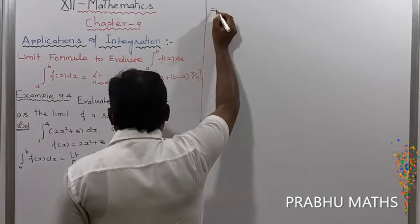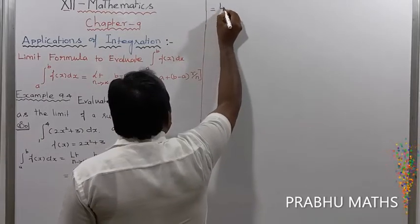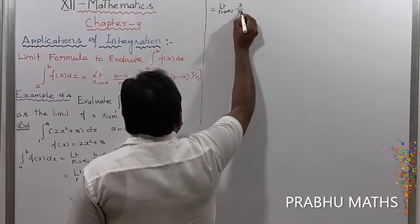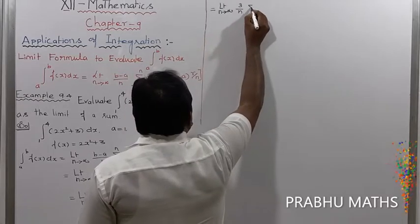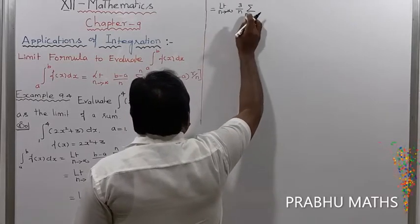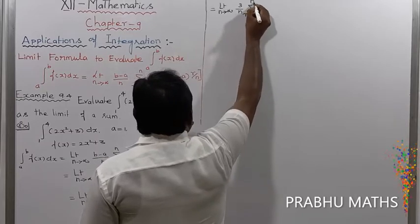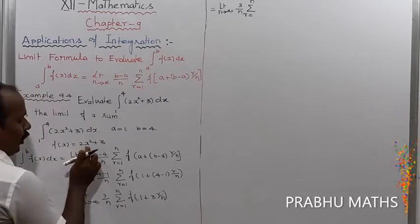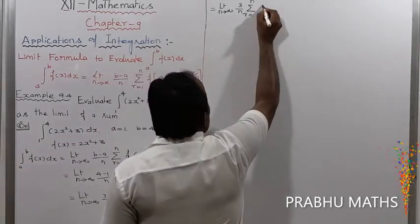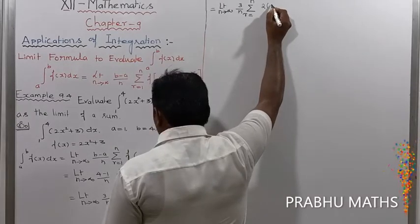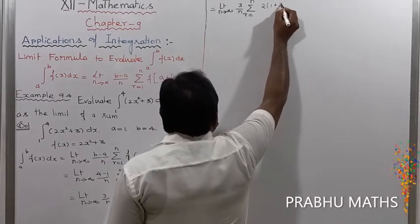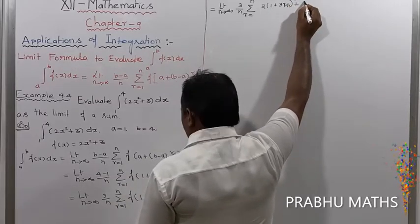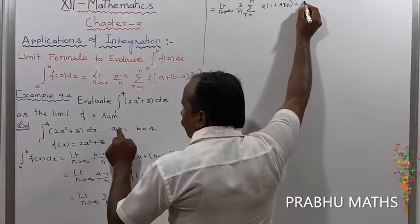This equals limit n tends to infinity of 3 by n, summation r from 1 to n of f(x), where f(x) equals 2 into (1 + 3r/n) whole square plus 3.